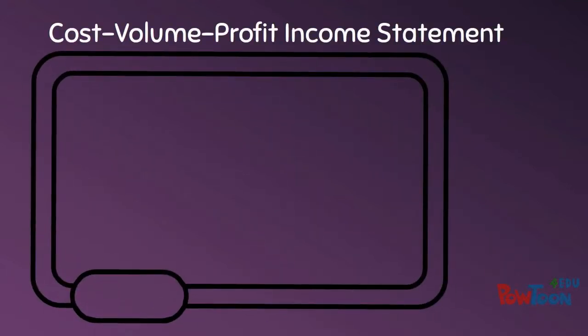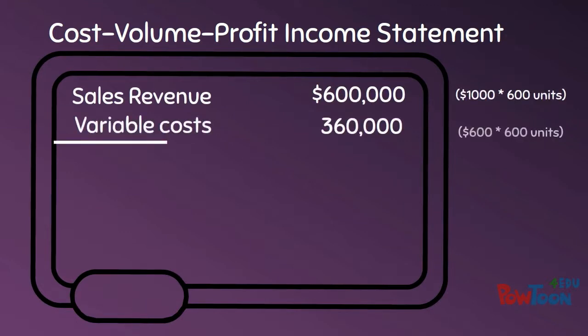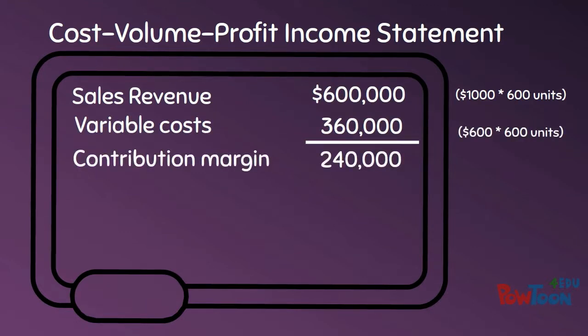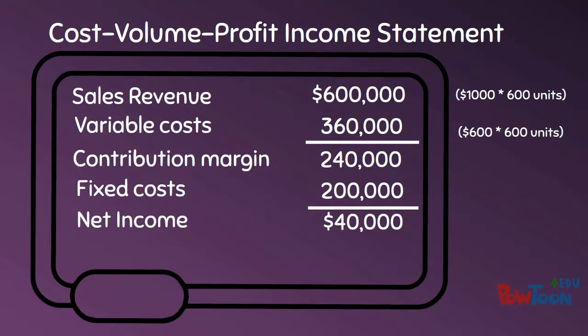A cost-volume-profit income statement separates our costs between variable costs and fixed costs, and shows us that with sales of 600 units, our net income would be $40,000.